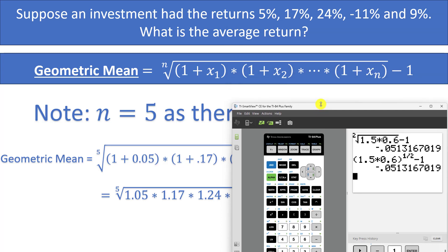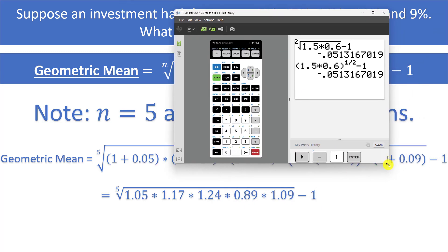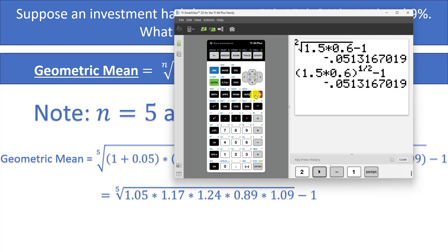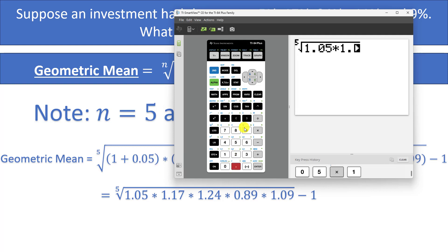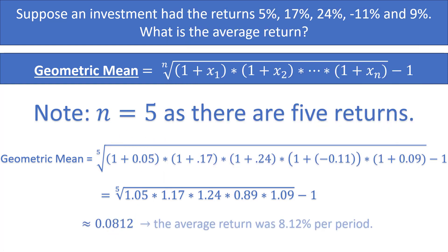Let's practice typing this into our calculator. I'll do it in both ways - one way by typing in the fifth root and then secondly doing the 1/5th power. So to do the fifth root I'm going to type in 5, math, option 5, and then I'm going to type in everything: 1.05 times 1.17 times 1.24 times 0.89 times 1.09, arrow out, minus 1, and I'm going to get 0.0812. So this tells us that the average rate of return is 8.12% per period. That means that if we would have gotten 8.12% return per period instead of all these returns we would still be left with the same amount of money.